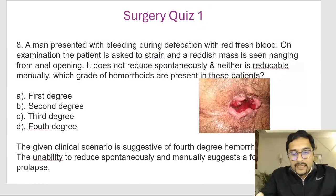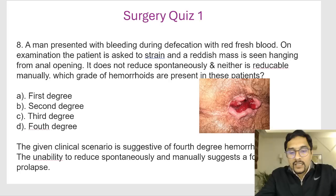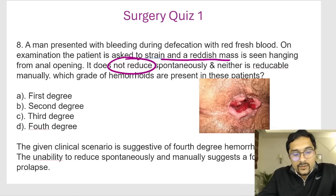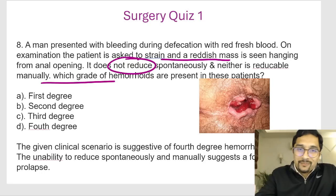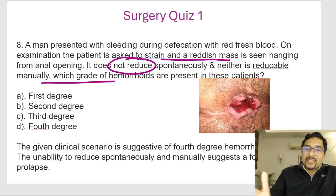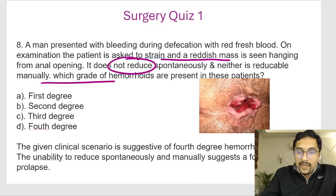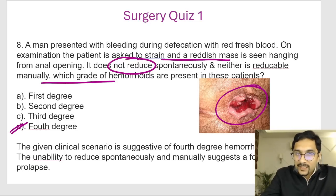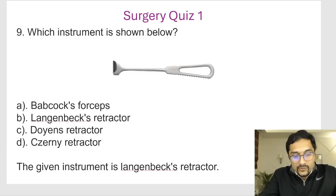A male presents with bleeding during defecation and frank blood, with a reddish mass hanging from the anal opening that does not reduce spontaneously and cannot be reduced manually. This is a Grade 4 haemorrhoid, which requires surgery — as already discussed.